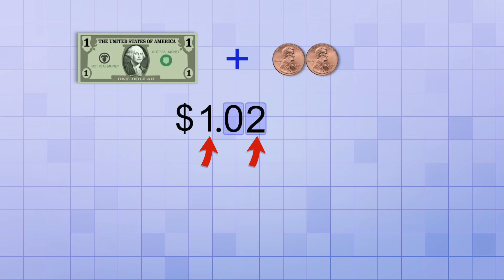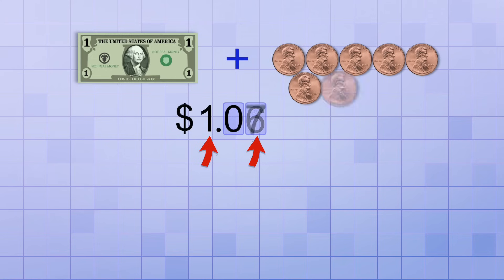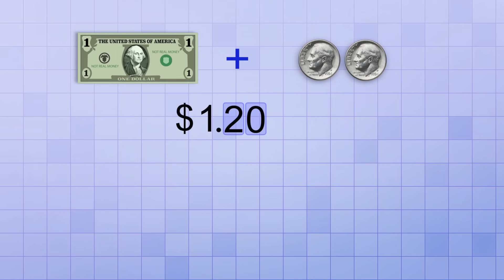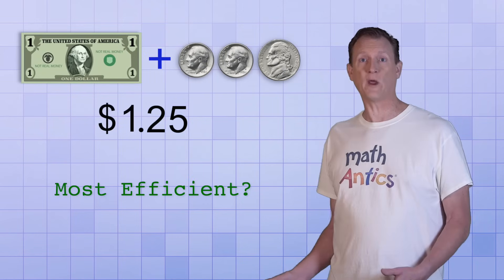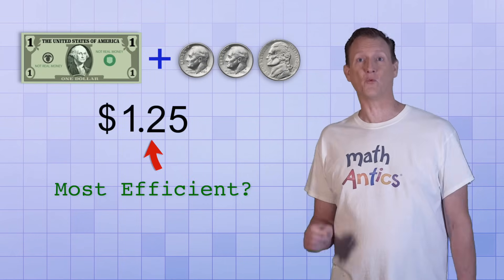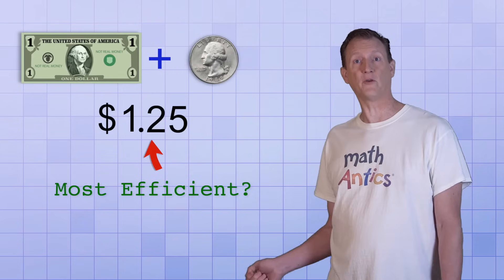Since we have one dollar and one cent, there's a one in the ones place representing one dollar, and a one in the hundredths place representing one cent. If we had one dollar and ten cents, that would be one dollar plus one-tenth of a dollar, so there's a one in the ones place, a one in the tenths place, and a zero in the hundredths place. One dollar and twenty cents would be written like this, and one dollar and twenty-five cents would be written like this. The most efficient way to represent that amount using physical currency is one dollar bill plus one quarter for the twenty-five cents.